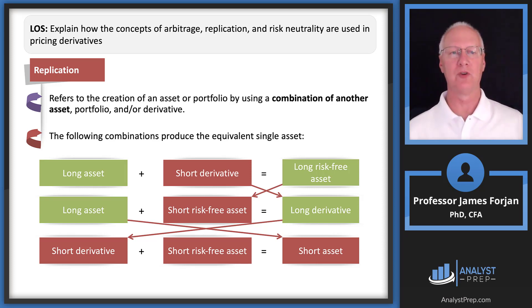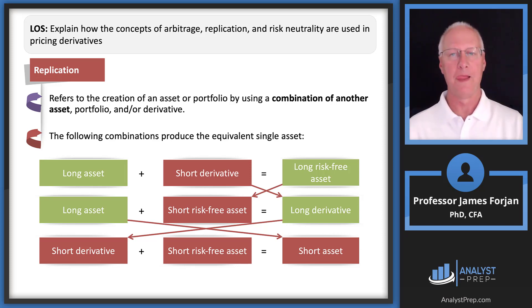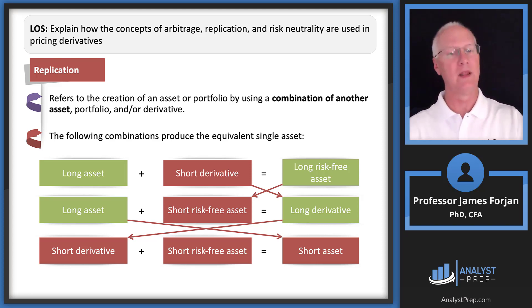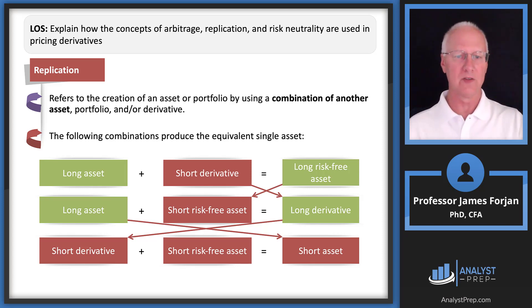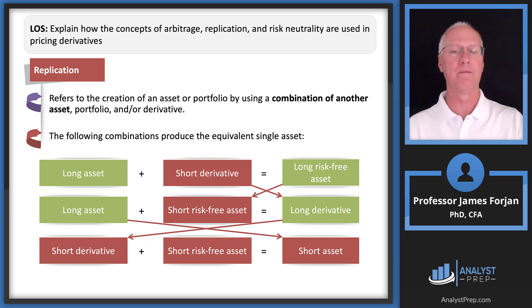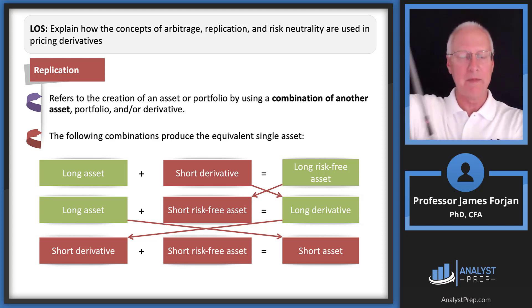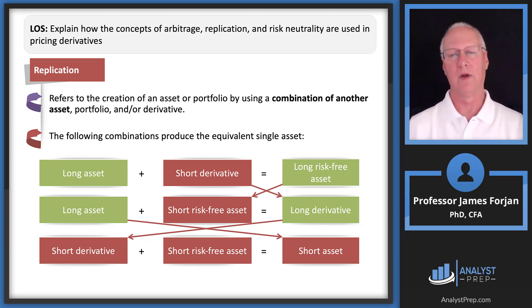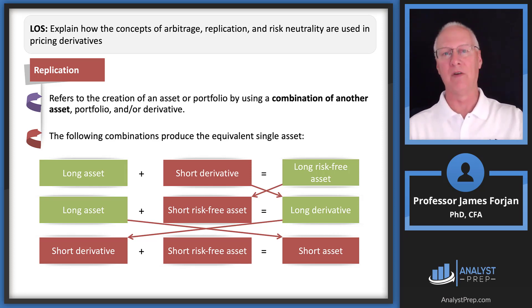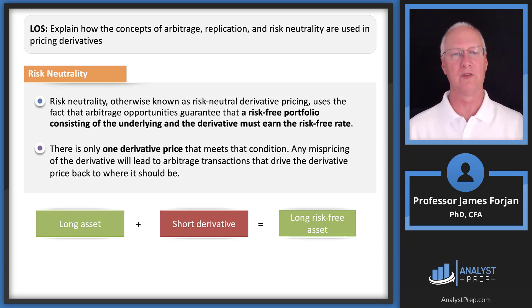Let's look at risk neutrality. This sounds like something we don't want any part of — what world are we living in where individuals or institutions are neutral to risk? That implies we don't care about risk, only return. But what really smart researchers have found over the last 50 years is that in derivative pricing, the assumption of risk neutrality works perfectly well by assuming an asset just increases in value by the risk-free rate. It doesn't make sense for pricing a risky bond or share of stock, but it does make perfect sense when pricing a derivative, because risk neutrality is based on the ideas of both arbitrage and replication.